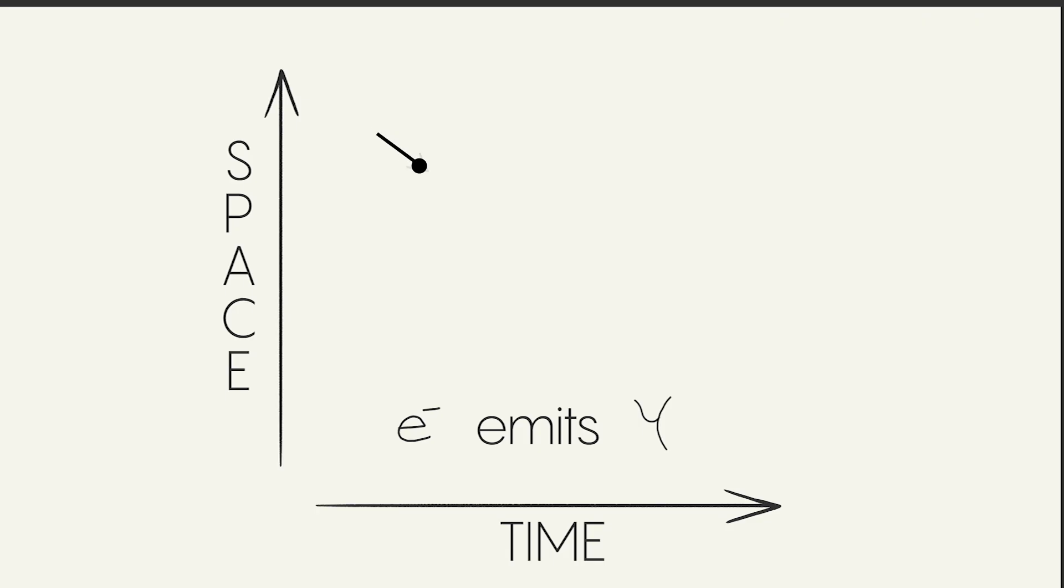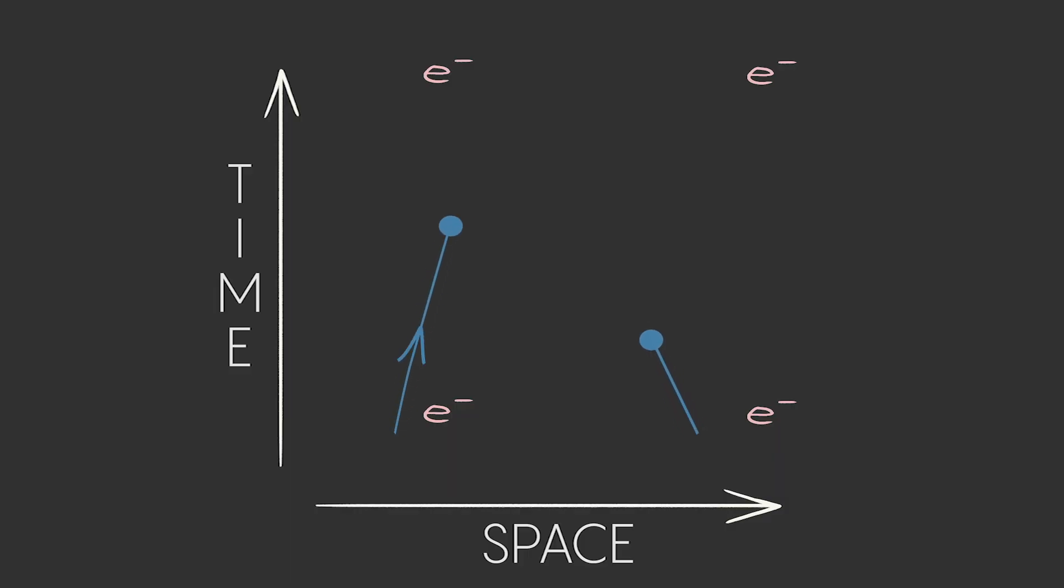The straight lines are particles of matter, like electrons, and the wavy lines are particles that convey forces, like photons. In this simple interaction, two electrons scatter.